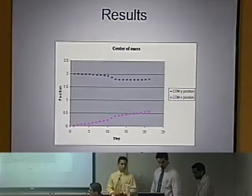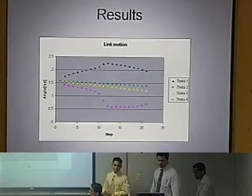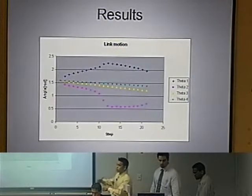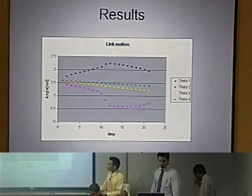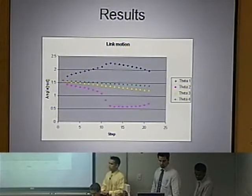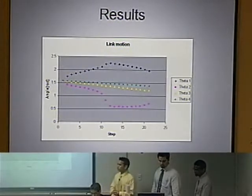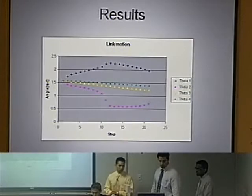And this is the motion — the position of each individual limb — showing the thetas involved in each gait of the biped.